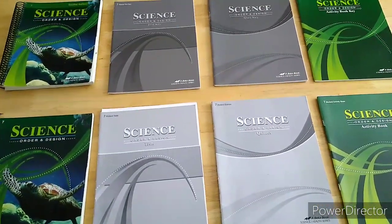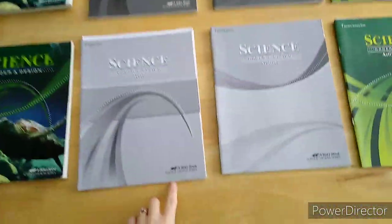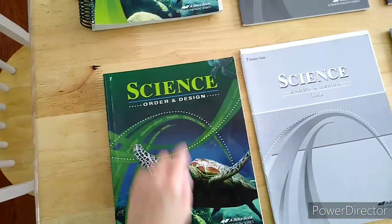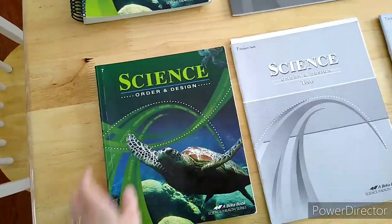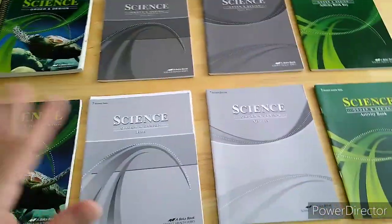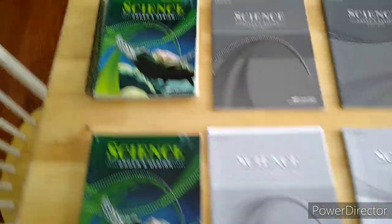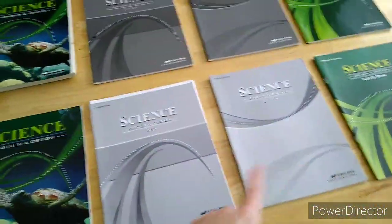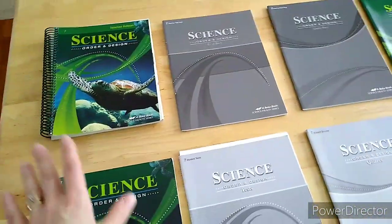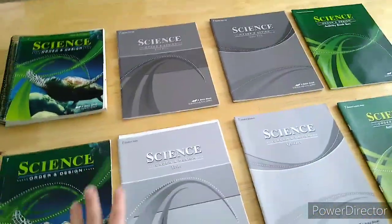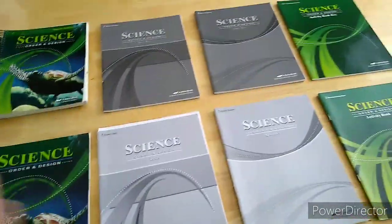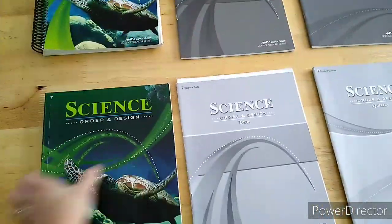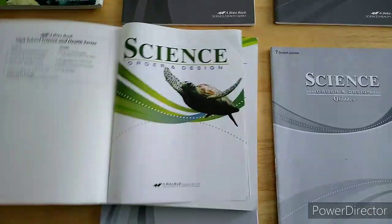Today I'm going to walk you through Abeka's science and health series. This is for seventh grade science, and the topic is Order and Design. I'm going to show you a little bit in each book. Up here on the top, these are all the teachers, and down on the bottom, this is the students. This is the whole set, at least when this was bought.